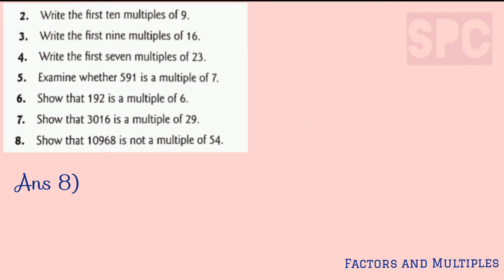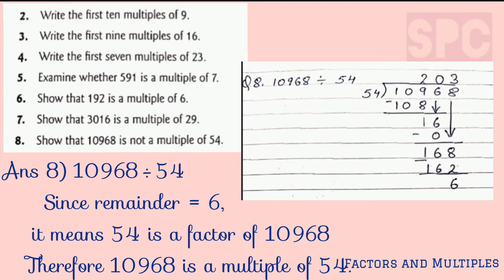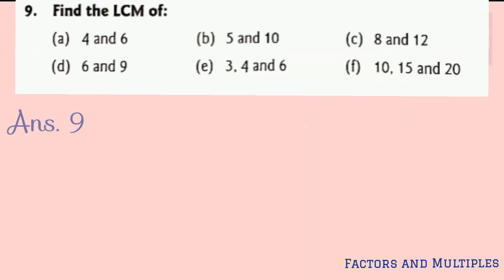Question number 8: show that 10968 is not a multiple of 54. The procedure is the same — divide 10968 by 54. After dividing, we get 6 in the remainder. It means 54 is not a factor of 10968, and 10968 is not a multiple of 54.